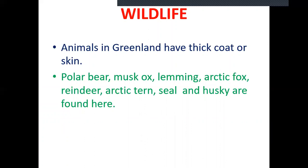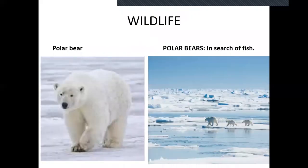It is a very cold region, so all animals of Greenland have a thick coat and skin. Important animals found in Greenland are polar bear, musk ox, lemming, arctic fox, reindeer, seal, husky, arctic tern, and many types of seals. Polar bears search for fish in the Arctic Ocean.